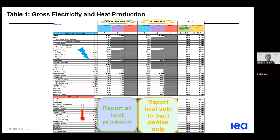Coming to the first table: it is used to report gross electricity and heat production. These values should be consistent with the electricity questionnaire, even though here we collect more detail for the renewable products. The table is divided into two parts: gross electricity production reported in gigawatt hours, and heat production reported in terajoules. Producers are classified as main activity producer and auto-producer, further divided into electricity-only plants, combined heat and power plants, and heat-only plants. Regarding heat reporting, all heat production from main activity producer plants should be reported, while for auto-producers, only heat sold to third parties should be reported.